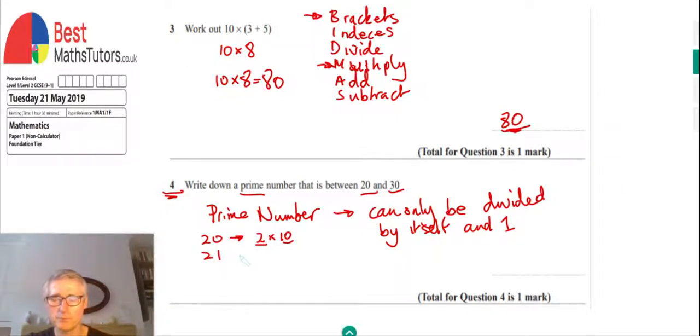21, if we can find any numbers that will divide into these and multiply to make 21, then it's not going to be a prime number. We can see that 3 times 7 will give us 21, so that's not a prime number. We'll look at 22. Well, if you can think of any numbers which will divide into that, like we could say 11 times 2 would give us 22. That's not a prime number. Go to the next one.